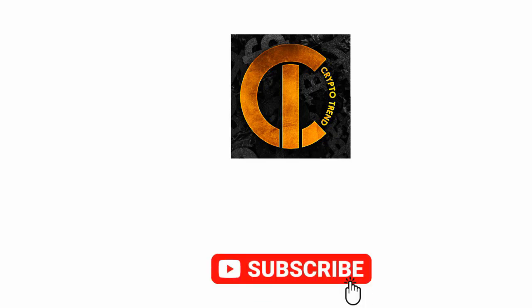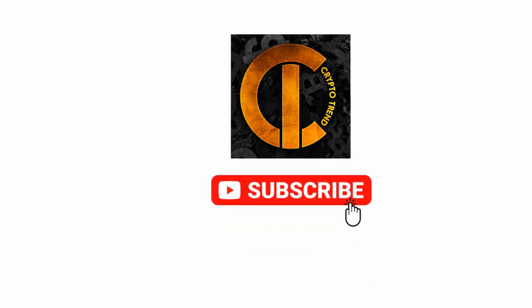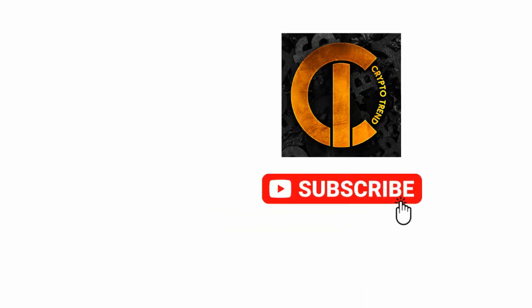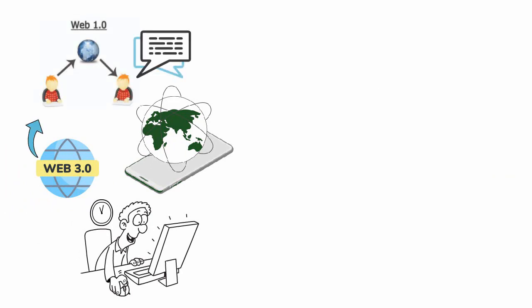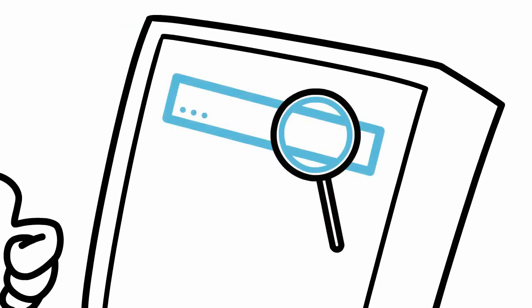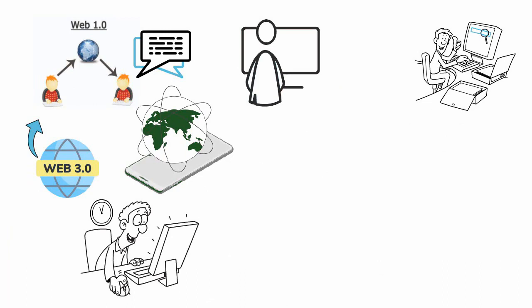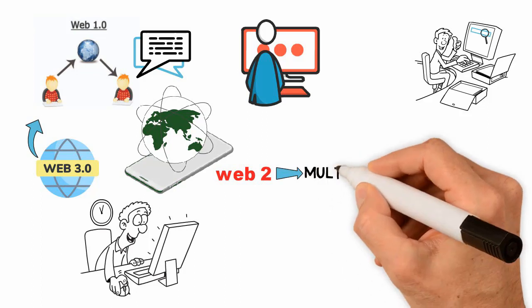Web 1.0 was essentially a bulletin board where people could create read-only text threads. In other words, the early web allowed us to search for information and read it. There was very little in the way of user interaction or content generation.